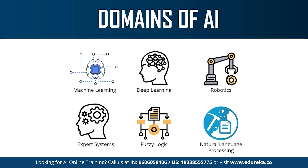Then we have robotics, a branch of artificial intelligence that focuses on different branches and applications of robots. AI robots are artificial agents which act in the real-world environment to produce results by taking accountable actions. Sophia the humanoid is a very good example of AI in robotics. Then we have fuzzy logic — a computing approach based on the principle of degree of truth instead of Boolean logic. Fuzzy logic is used in medical fields for complex decision-making problems and also in automating gear systems in cars.